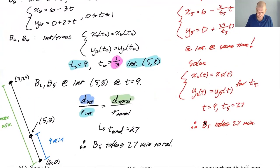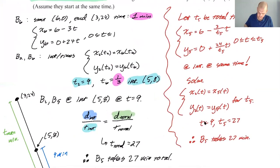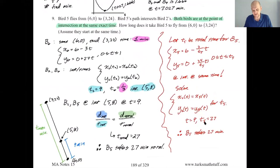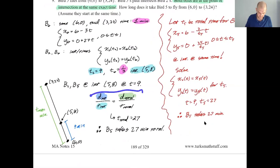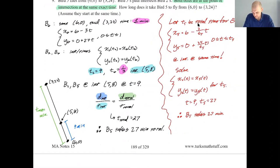I prefer the process where you think things through and reason it out. But that's really three approaches: one where we use Bird 6 taking 1/3 of its time so 9 gives 27; another proportional reasoning with distances; and a third super algebraic approach dependent on the calculator. Anyway, that's it for this problem. Bird 5 takes 27 minutes. I'll stop here and be back in the next video — I think we're moving on to talk more about conics.